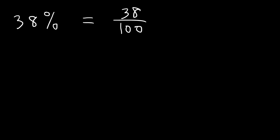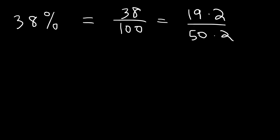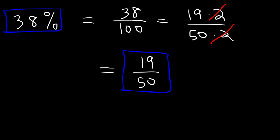Now, once you have this fraction, all you need to do is reduce it. Both numbers are even, so you could break down 38 into 19 times 2. If you divide 38 by 2, you're going to get 19. 100 is 50 times 2. Notice that we can cancel a 2, so that fraction reduces to 19 over 50. And that's how you can convert a percentage into a reduced fraction.